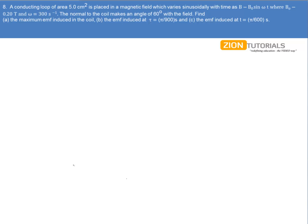A conducting coil of area 5 cm² is placed in a magnetic field which varies sinusoidally as B equal to B₀ sin ωt, where B₀ is given by 0.20 Tesla and ω is given by 300 s⁻¹. It is given that θ is equal to 60 degrees, where θ is the angle which the coil makes with the magnetic field.